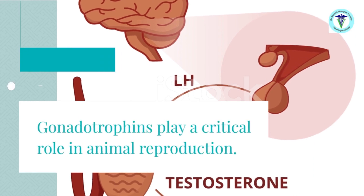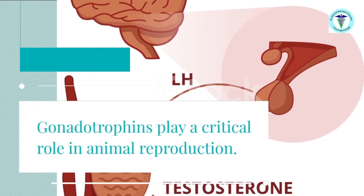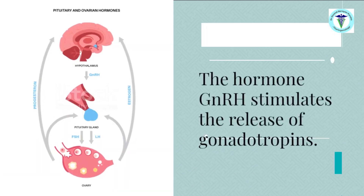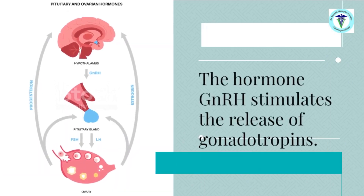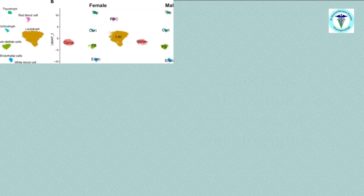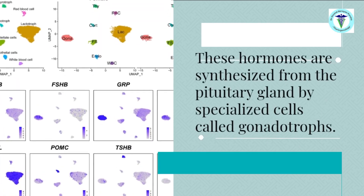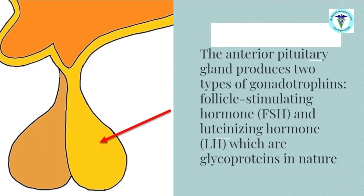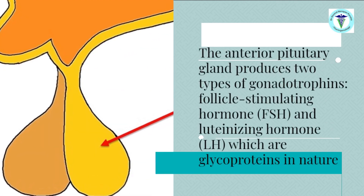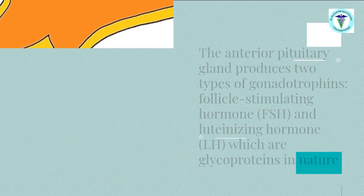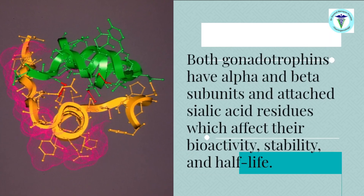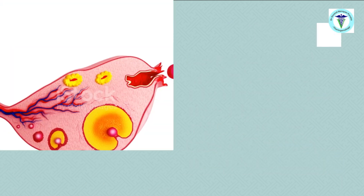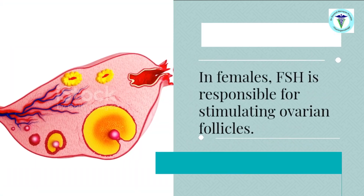Gonadotrophins play a crucial role in animal reproduction. The hormone GnRH from the hypothalamus stimulates the release of gonadotrophins, which are synthesized in the pituitary gland by specialized cells called gonadotrophs. The anterior pituitary gland produces two types of gonadotrophins: FSH and LH. Both have alpha-beta subunits and attached sialic acid residues, which determine their bioactivity.